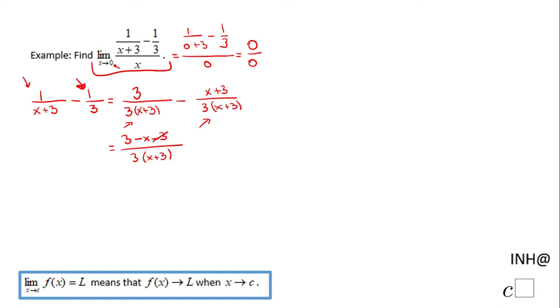If you notice, these two threes cancel out, so the simplest form here is -x over 3(x+3). Now we can go back to this limit, and that limit becomes limit as x approaches 0 of -x over 3(x+3).